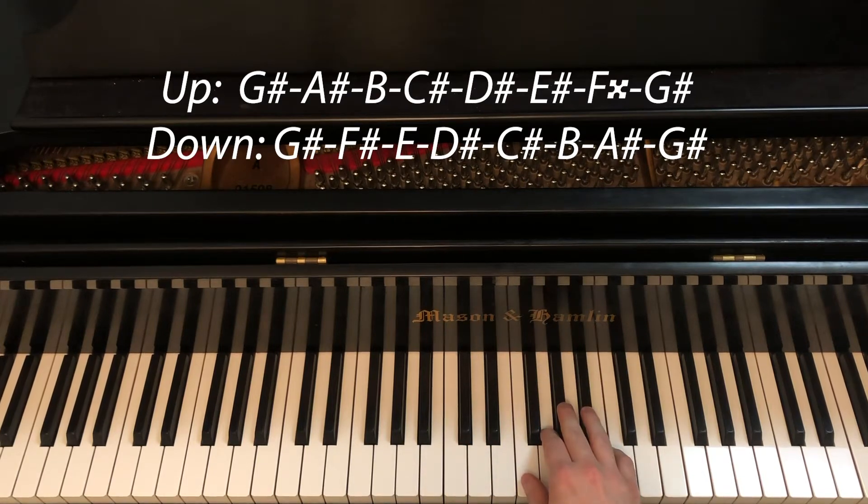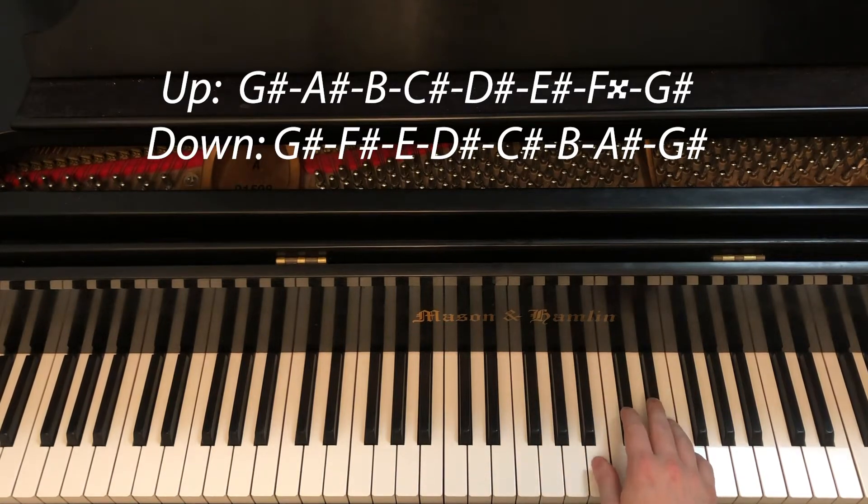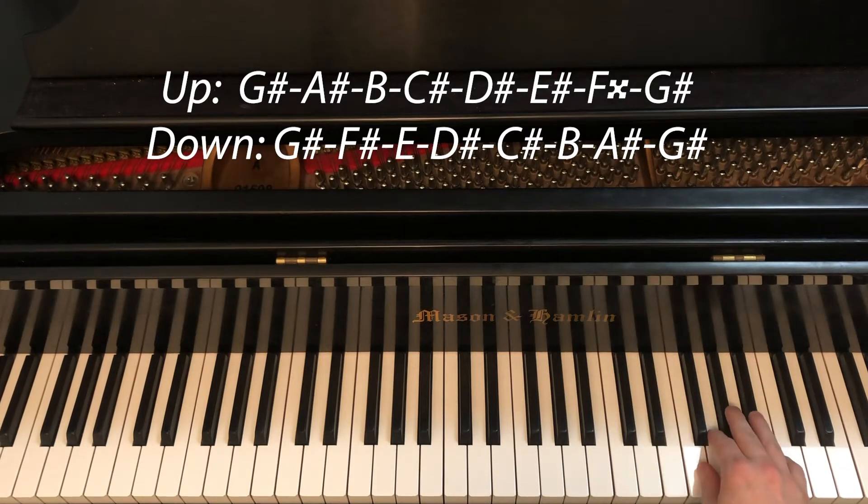Then we put the thumb on E-sharp, E-sharp, F-double-sharp, G-sharp, A-sharp. Then thumb on B, 1-2-3. Thumb on E-sharp.